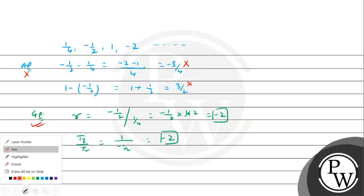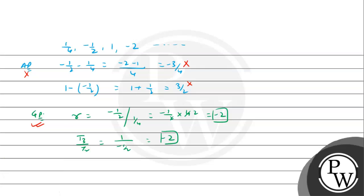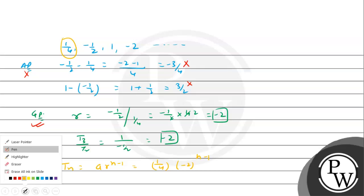Now that it is a GP, we need to find the nth term. The nth term of a GP is a times r raised to the power n minus 1. Here a is the first term, which is 1/4, and r is minus 2. So the nth term is (1/4) times (minus 2) raised to the power (n minus 1).